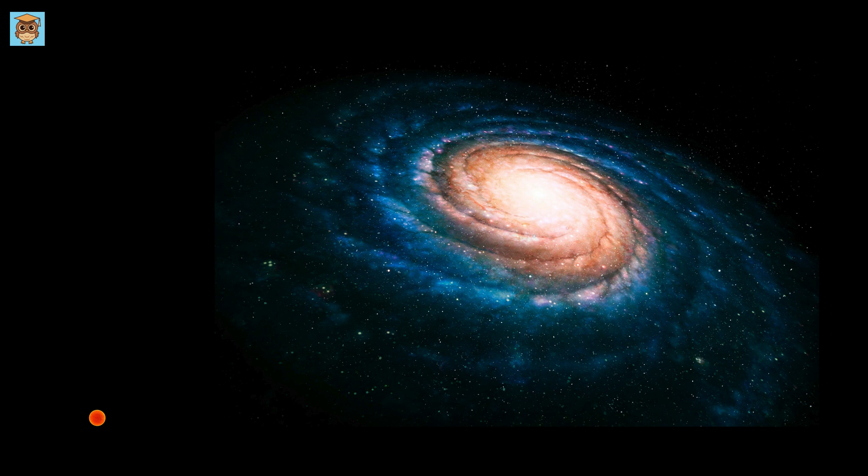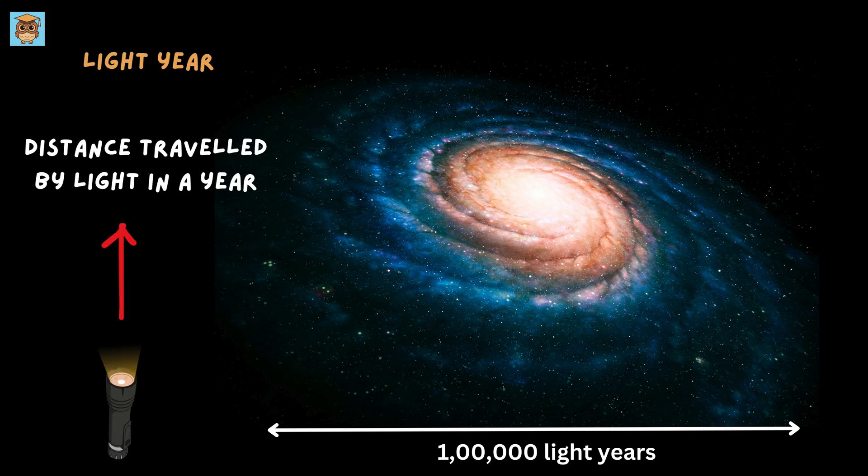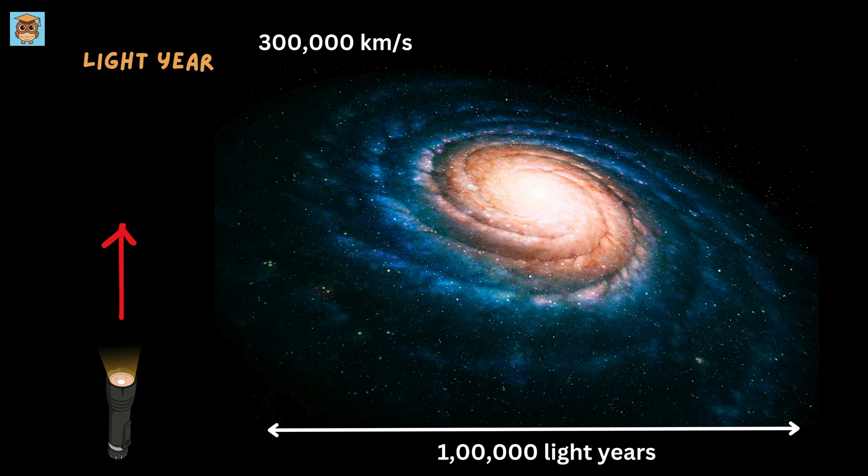Now even this star is nothing compared to our galaxy. Our Milky Way galaxy is about 100,000 light-years across. Wait, what's a light-year? It's the distance light travels in one year. Since light is the fastest thing in the universe, moving at 300,000 kilometers per second, one light-year is about 9.5 trillion kilometers.